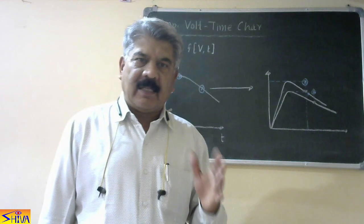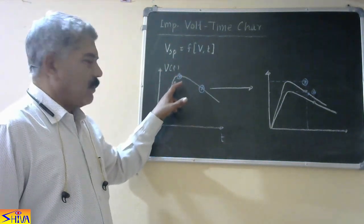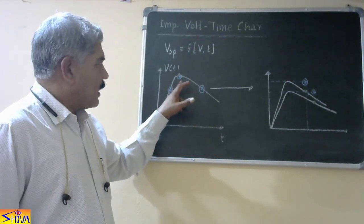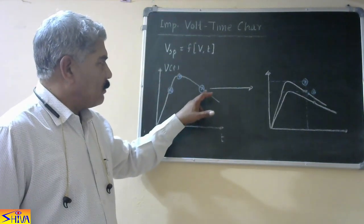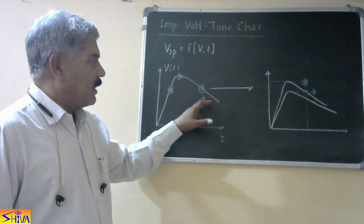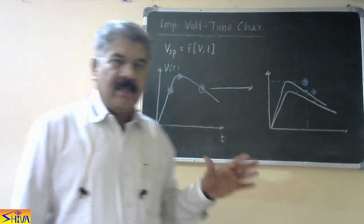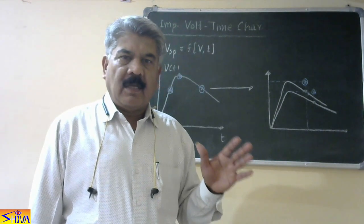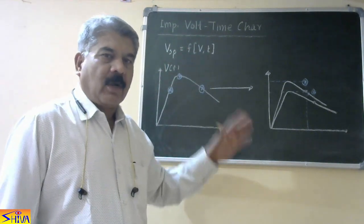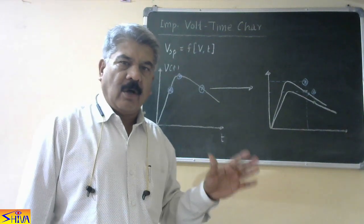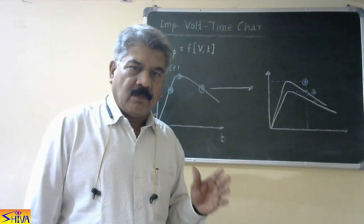If spark over takes place, there are three possibilities. Number one: spark over occurs on the wave front, that is on the rising portion. Second: spark over occurs at the peak value. Third: spark over occurs at the wave tail, that is at the decreasing portion of the impulse wave. We apply a series of standard impulse voltage waves, find a number of points, and then join all these points by a smooth curve — that will be the impulse volt-time characteristic.